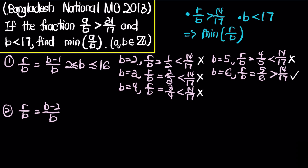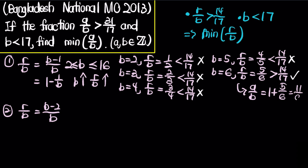We conclude that b equals 6 is the minimum for this case because r over b equals 1 minus 1 over b is an increasing function — as b increases, 1 over b decreases, so the function increases. Therefore the smallest valid b gives the minimum r over b. When b equals 6, a over b equals 1 plus 5 over 6, which equals 11 over 6.